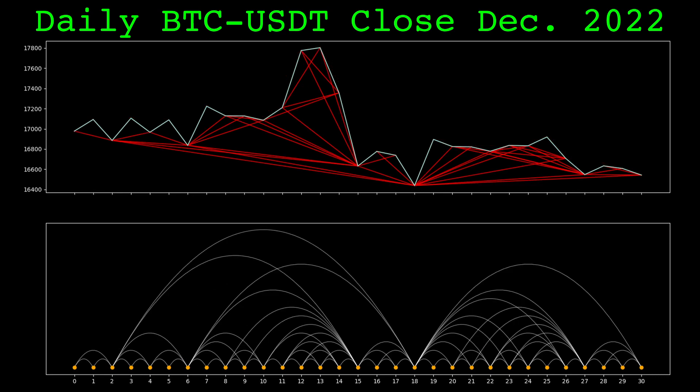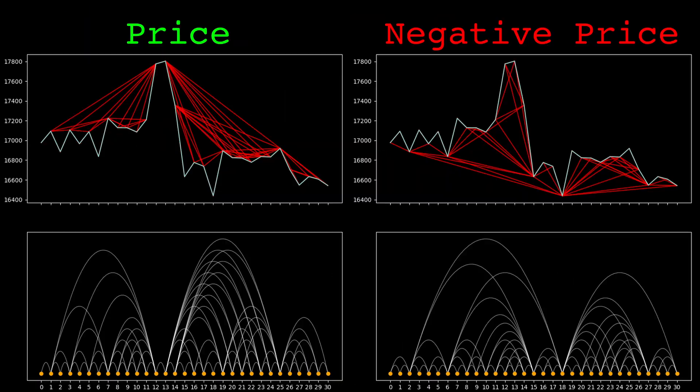If we simply multiply the input series by negative 1, when building the visibility graph, we get this instead. Comparing the regular input's graph and the negative input's graph, the results are quite different. The graphs have completely different links.